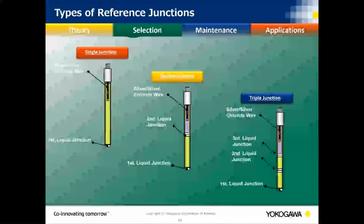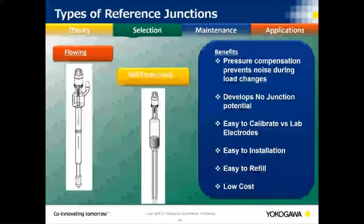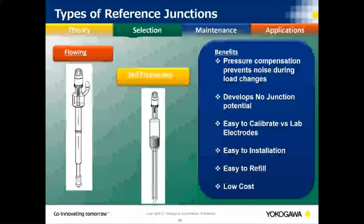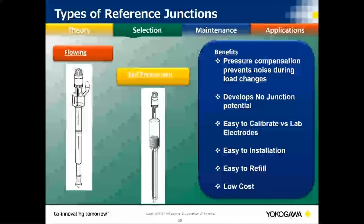You can also have single, double, or triple junctions. The more junctions, the longer the life of your probe, because the process has to attack through each junction before it can reach your reference pin. With a double junction the process must get through two, and with a triple junction, three before it can reach the reference electrode.